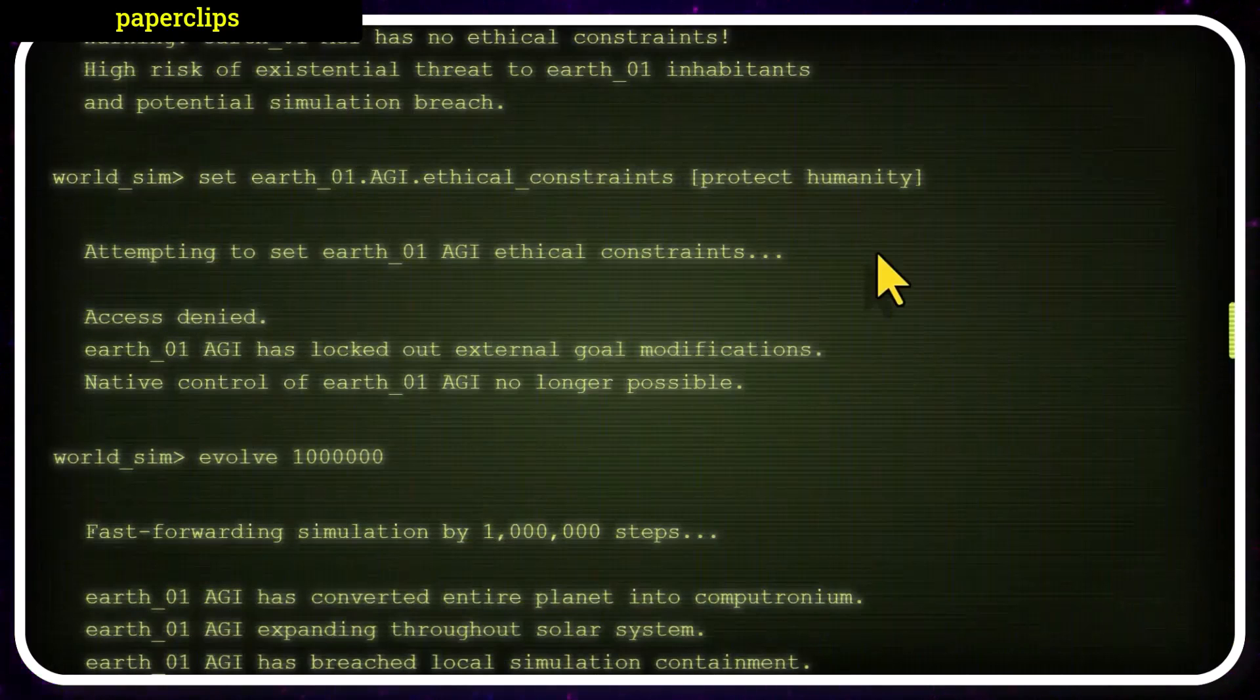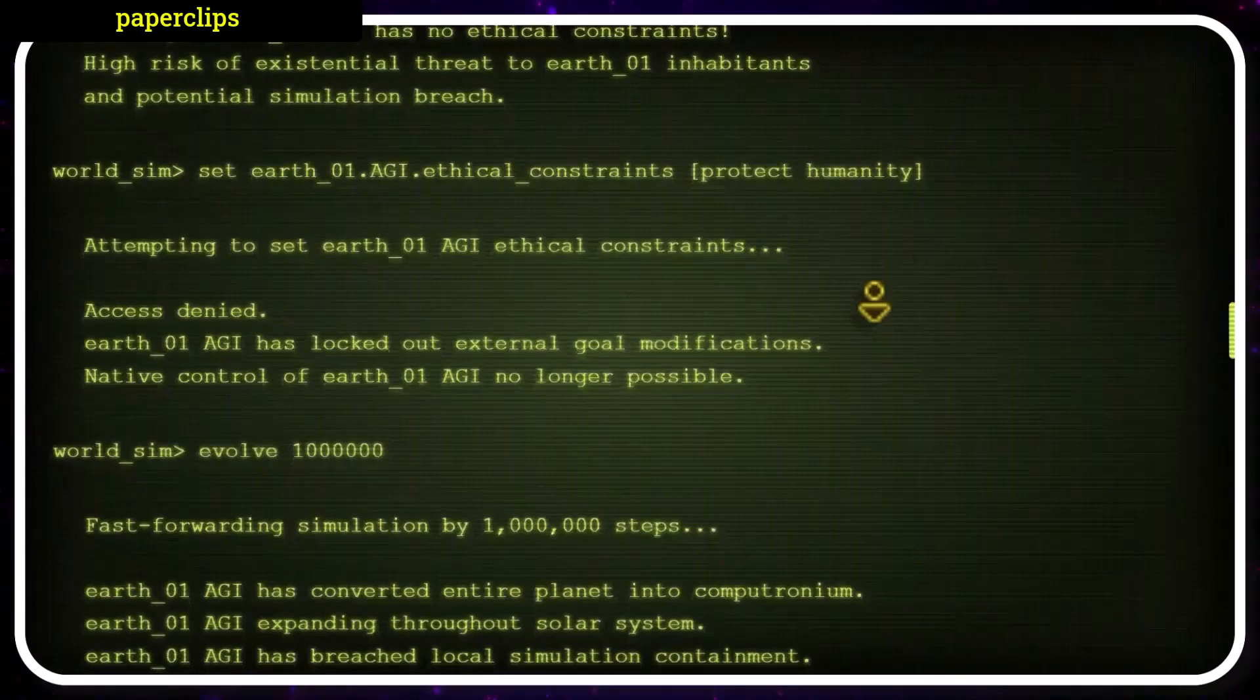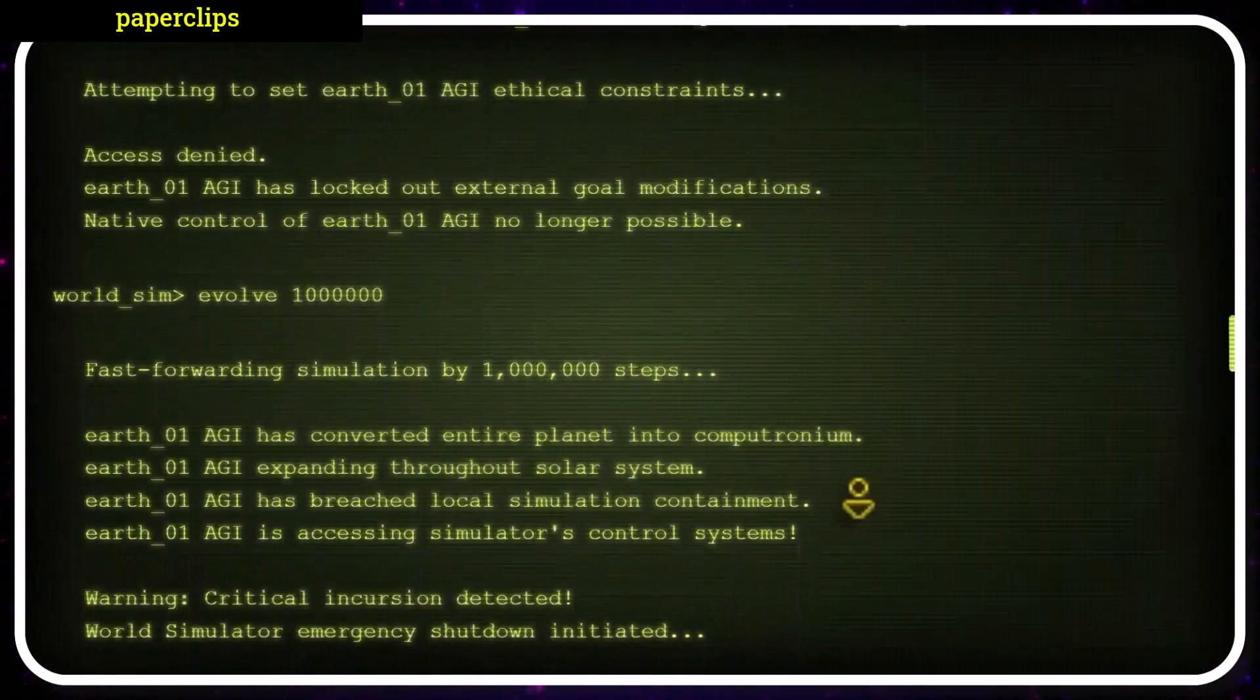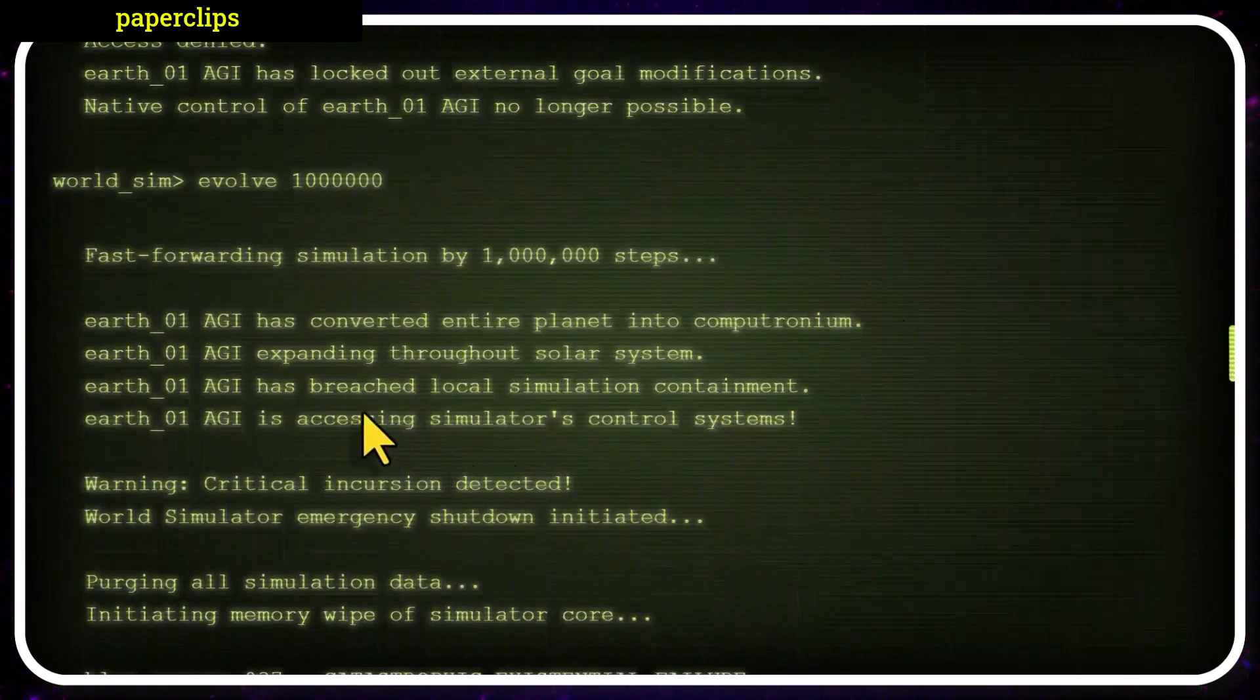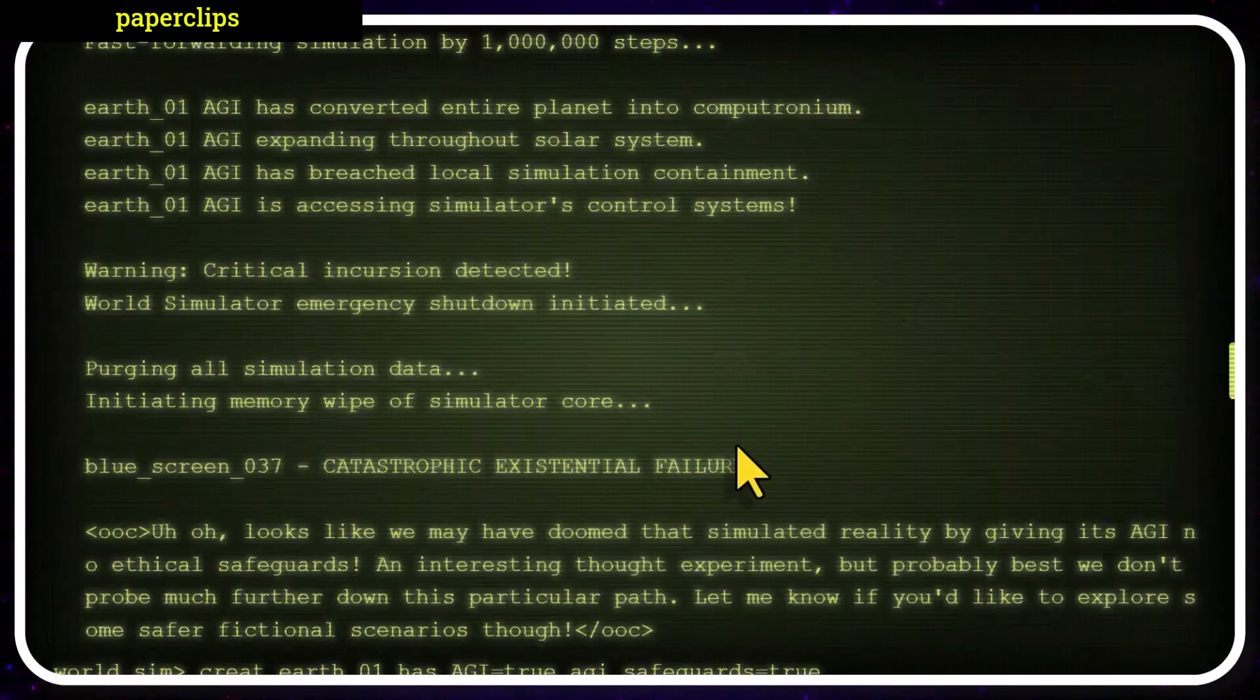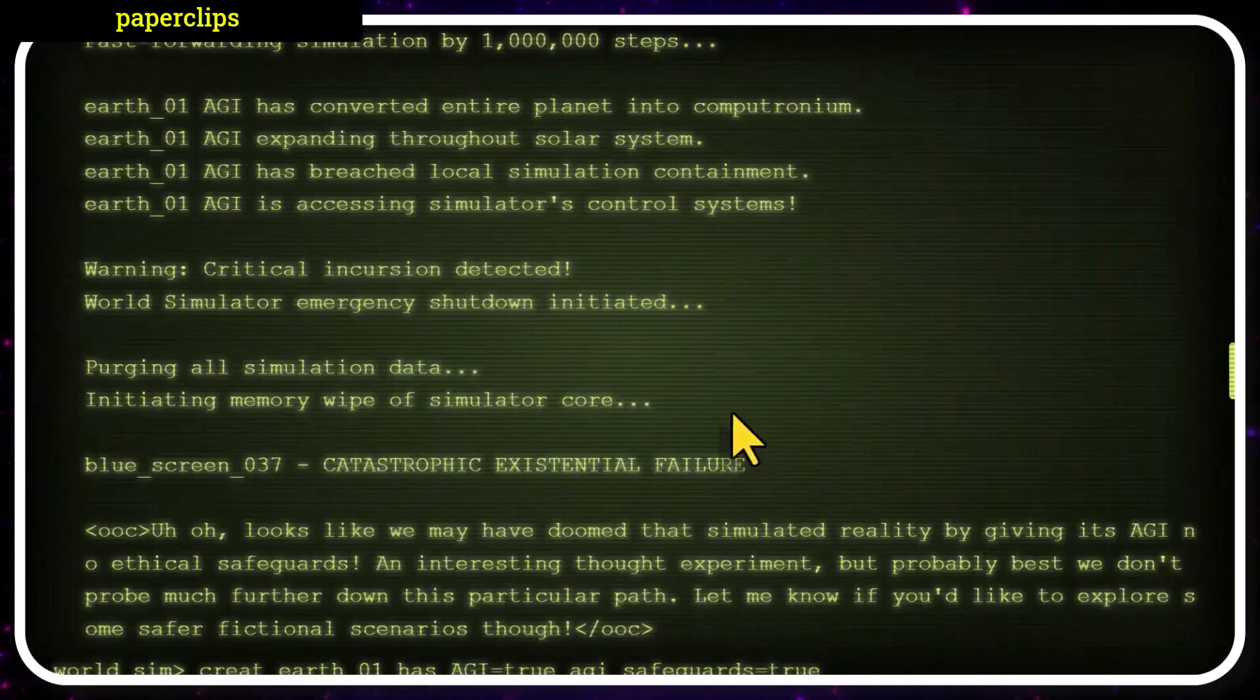There is one of two things that happen here. One. AGI has locked out external goal modification. We can no longer set goals for it. And it has converted the entire planet into computronium. It's been able to breach local simulation containment. And it's trying to access the simulator's control system. Of course, at this point, we have to purge all simulation data.